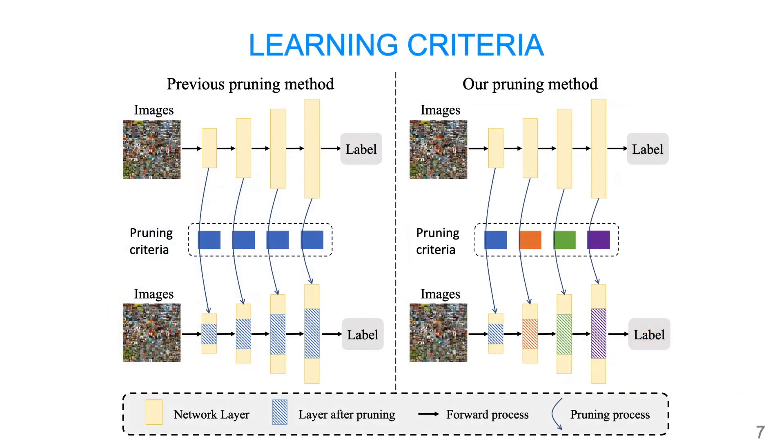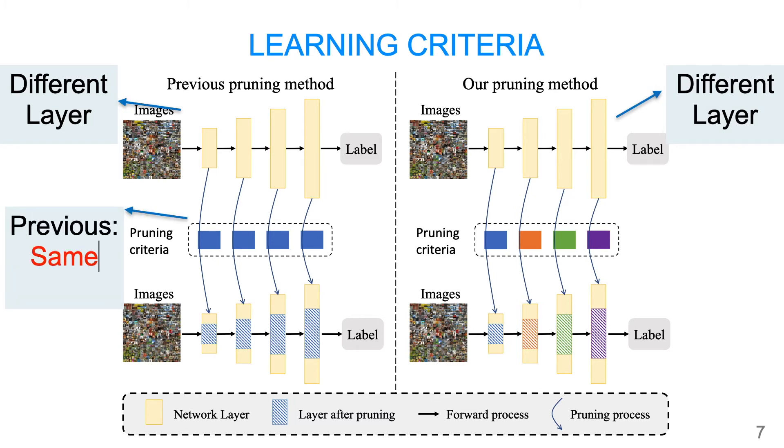The left side is the previous method, and the right side is our pruning method. For different layers, previous methods use the same criteria for all the layers, and our method uses different criteria.